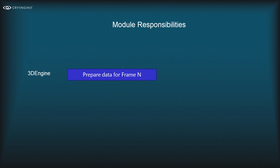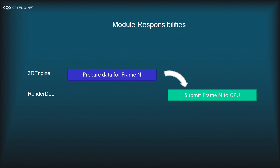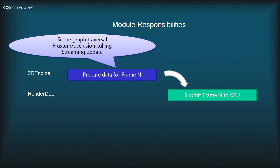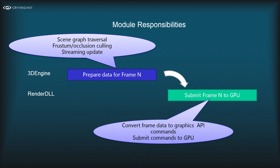These modules have a very split functionality. The 3D engine is mostly in charge of preparing a frame, whereas the renderer is in charge of submitting the frame to the GPU. When the 3D engine is done with frame preparation, it sends it to the renderer. Tasks in the 3D engine include scene graph traversal, octree traversal, visibility and occlusion culling — figuring out which objects are visible and which are occluded.